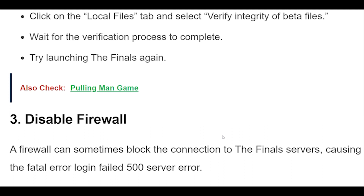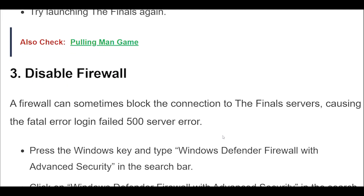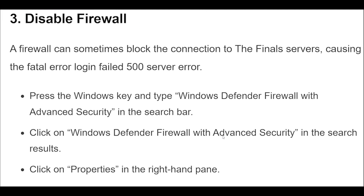Click on Properties in the right-hand pane. Under the Domain Profile and Private Profile tabs, select Off under Firewall State. Click OK to save the changes, then try launching the Finals again.